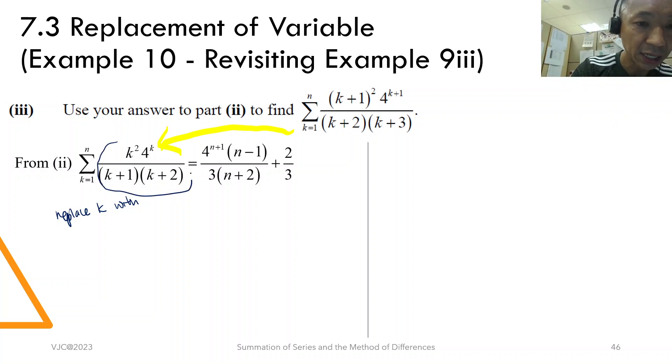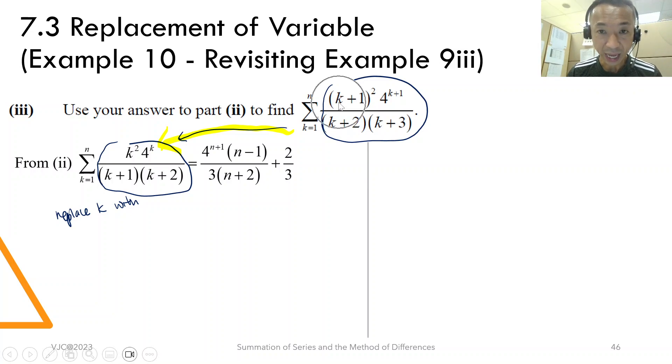Actually the clue is very simple. You just look at the summen here, you will know. From here to here, very simple, you just replace k with k minus 1. Then the summen will look the same already. But just take note,